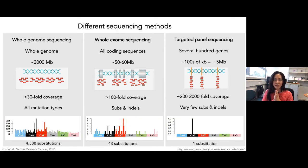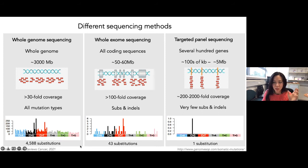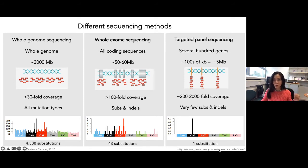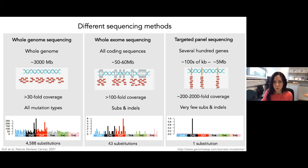To give a sense of scale: one patient sequenced by whole genome shows 4,500 substitutions; by exome, 43; and by targeted sequencing, just one. That is the difference in scale between targeted sequencing and a whole genome — important context for the mutational signatures section later.